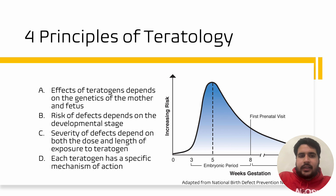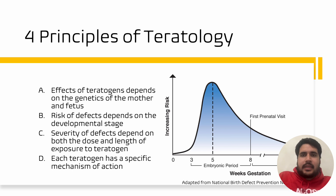Thirdly, the severity of defects depends on both the dosage and the length of exposure to the teratogen. For example, if the fetus is exposed multiple times to a teratogen, it is worse than being exposed once, and this can determine the severity of the defect. Lastly, each teratogen has a specific mechanism of action that causes the defect that is associated with that teratogen.